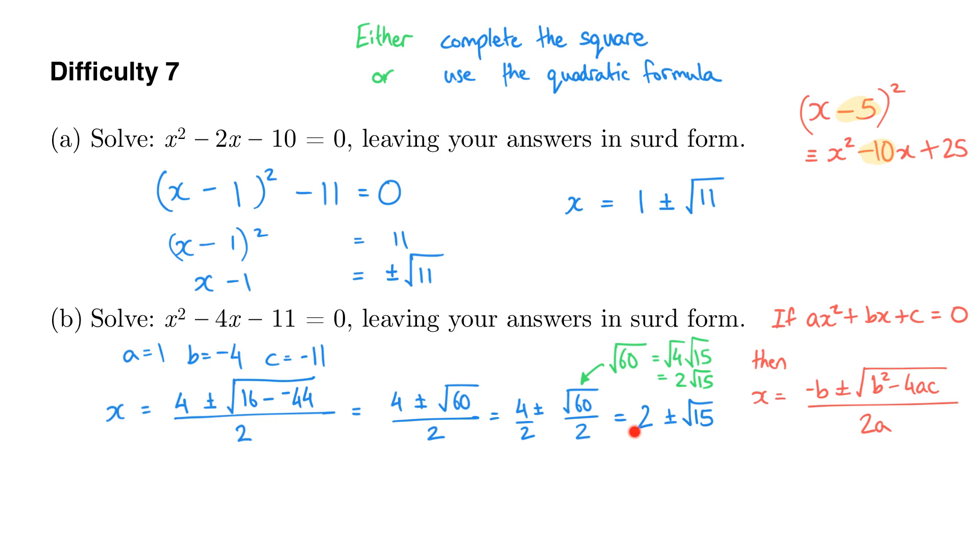So x is 2 plus root 15 or 2 minus root 15. We've got two solutions. That's what this symbol is telling us.